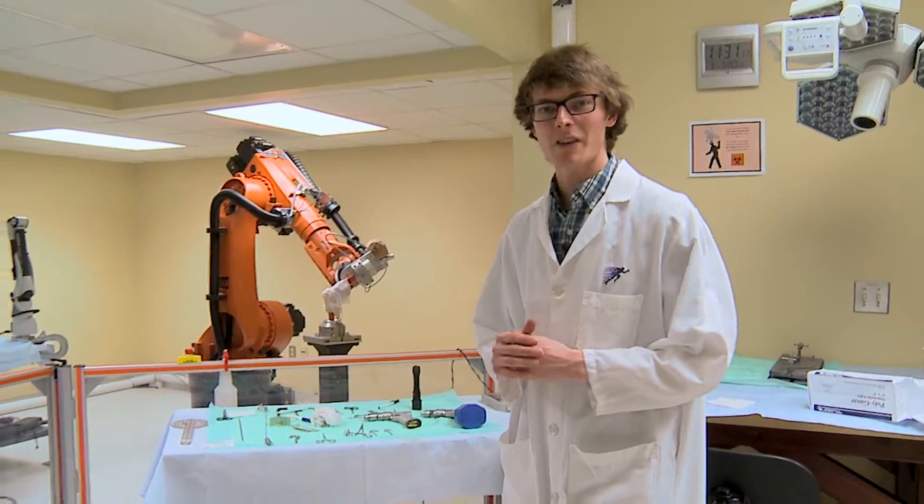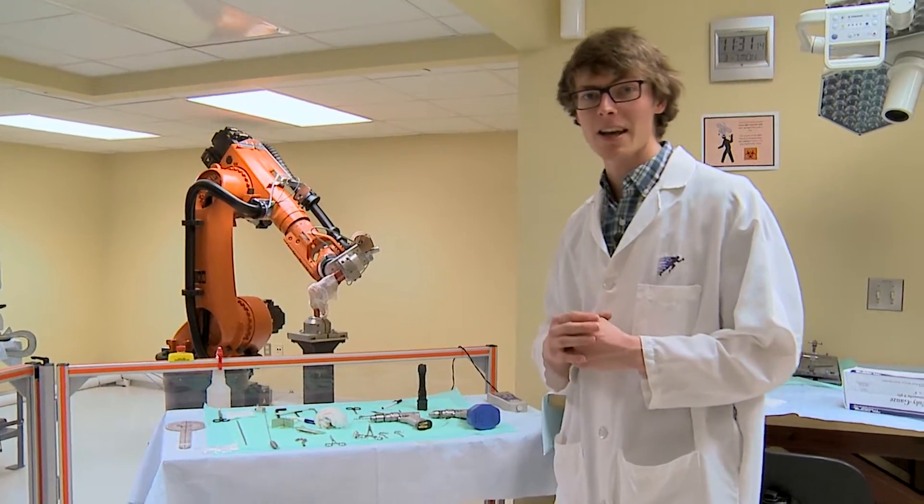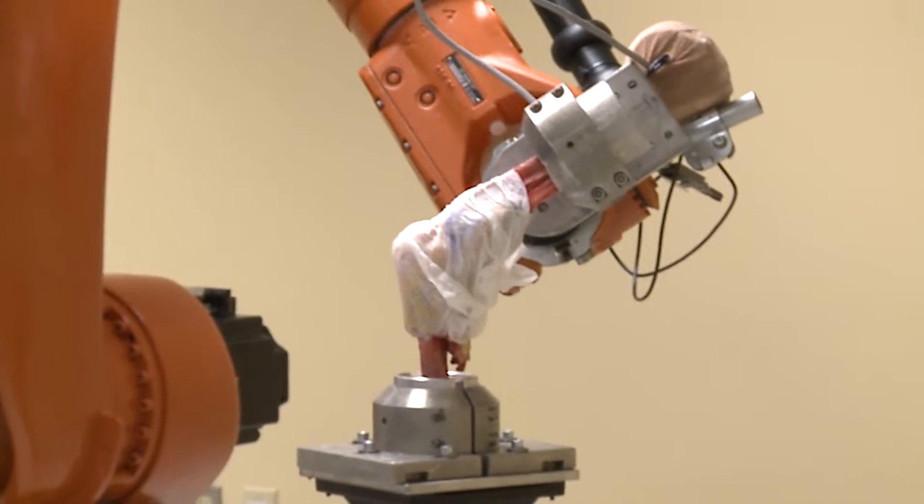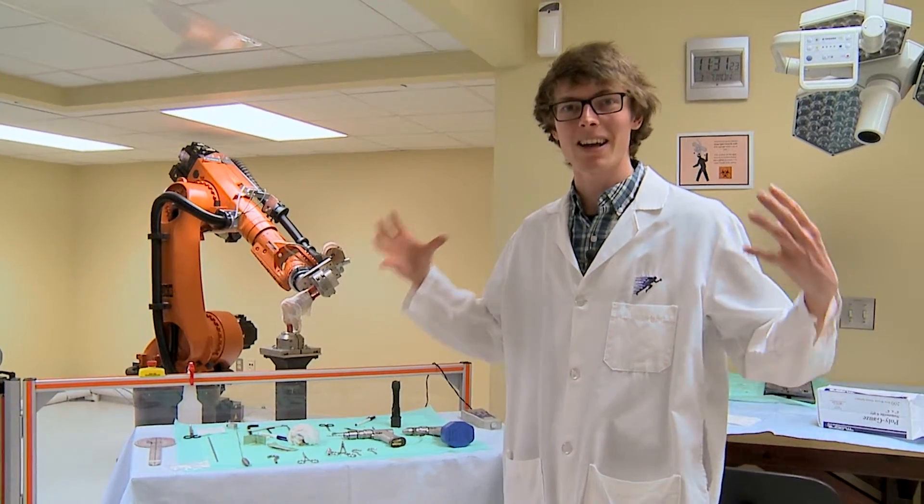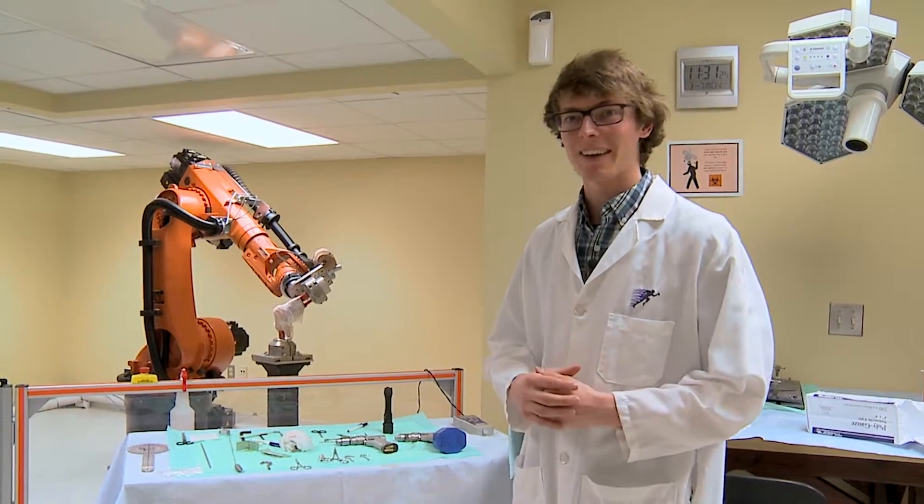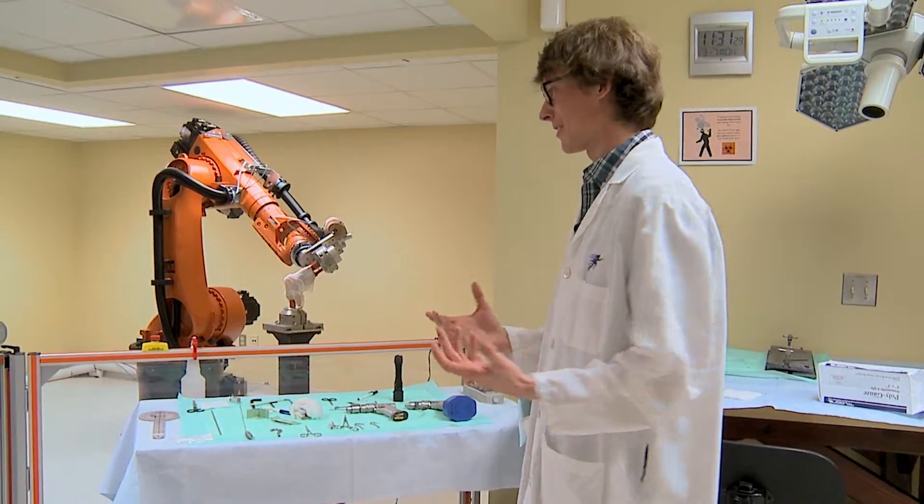The first piece of equipment I want to show you down here is our robot. This is a six degree of freedom robot from the company KUKA. Fun fact, it's actually designed for big assembly lines assembling cars and we repurposed it down here for orthopedic research.